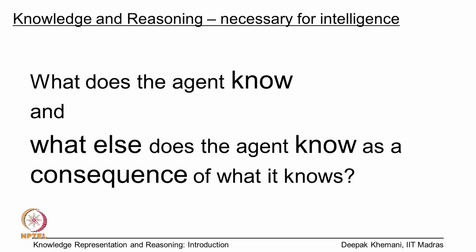In this course, which is a companion to a course that we did on problem solving using search, the focus is on knowledge representation and reasoning. The key thing we want to talk about is what does an agent know, and what else does an agent know as a consequence of what it knows — what does it know about the world and what can it infer about the world?